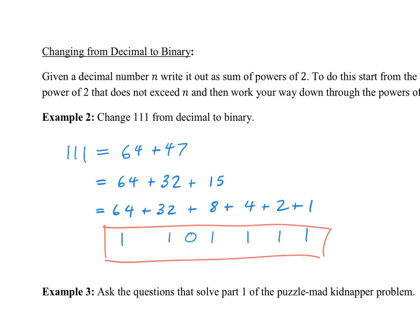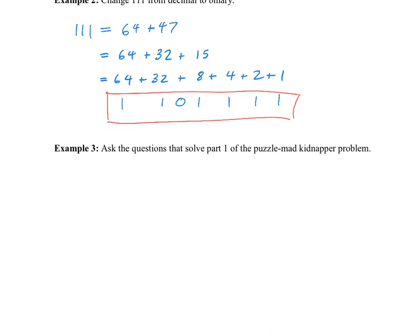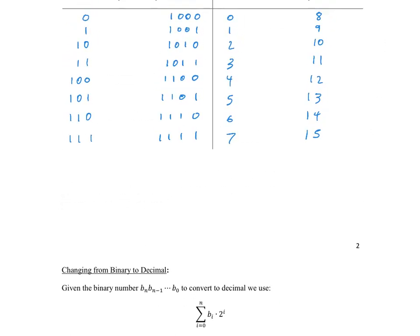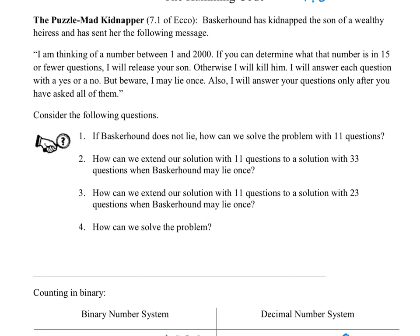As a final wrap-up to this video, we're going to solve part 1 of the Puzzle-Mad Kidnapper problem. What was that? If we scroll back up, part 1 says: let's just assume as a starting point that Baskerhound does not lie. How could we solve the problem with 11 questions? Let you think about that. Pause the video now. You have enough knowledge to do this one.